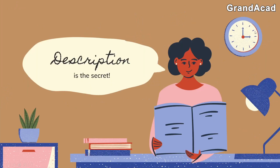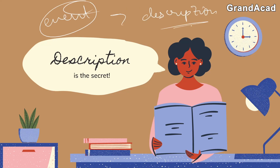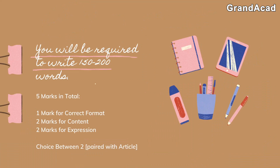What is the secret to scoring marks in this section? It's description. Remember, you have to describe a lot because you are writing about an event — what happened, when it happened, why it happened. But don't elaborate so much that your word limit exceeds. Do not write more than 200 words. You will be required to write 150 to 200 words in the exam.